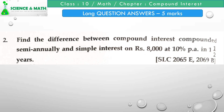Find the difference between compound interest compounded semi-annually and simple interest on rupees 8000 at 10% per annum for one and a half years. This question was asked in SLT 2065 as well as 2069. Here a sum of rupees 8000 is given, compounded semi-annually and also at simple interest at 10% per annum for one and a half years.